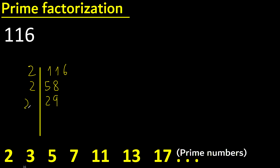Therefore divided by the same number — divided by 29 is 1. Therefore finish.